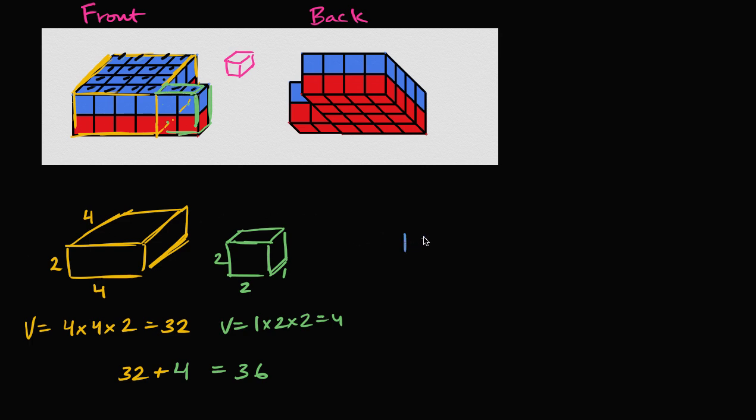So you see there are 18 cubes in the blue layer. And then there's going to be another 18 in the red layer. Plus 18, that also gets you to 36 unit cubes, or a volume of 36 cubic units.